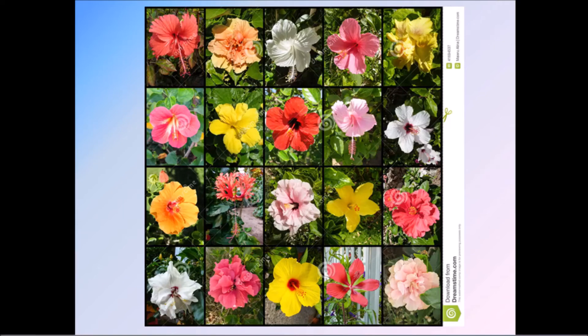For example, you can see a lot of hibiscus flowers here — also called shoe flower. There are various varieties here with different colors, texture, size, shape, and layers of petals. There are many varieties.